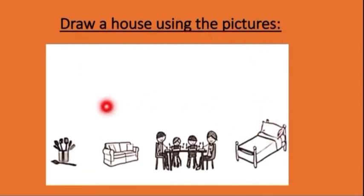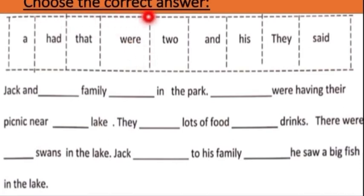Next is draw a house using the pictures. Children, you can see these pictures. According to that, you have to complete that drawing a house with including these pictures. We have some spoons. Then sofa is there. Then dining table and family is there. And also a bed. Next one. Choose the correct answer. Children, we are going to put all these words in this passage.